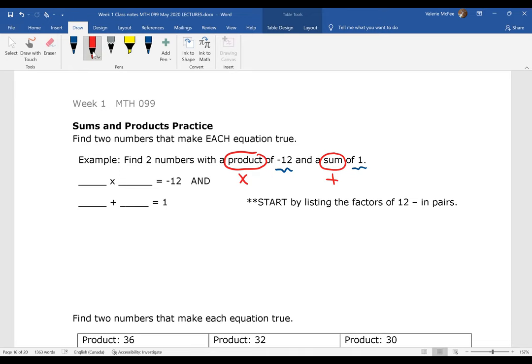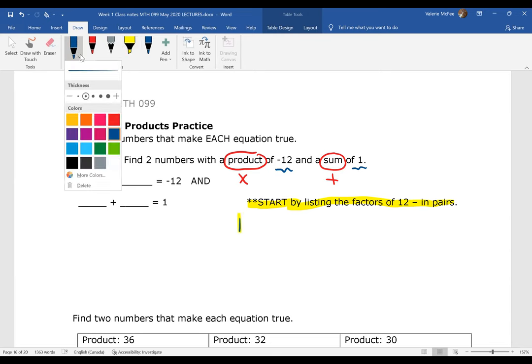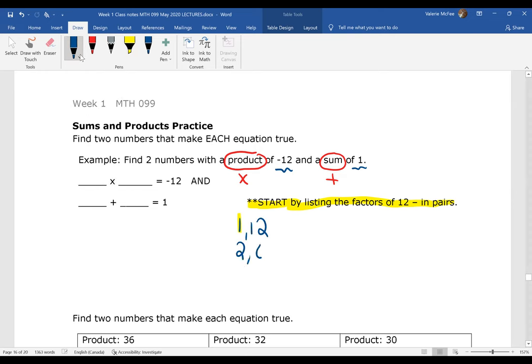So for looking for two numbers with a product of negative 12 and a sum of one, I hope you just know what they are. But if you don't know what they are just by thinking about it, you should start by listing the factors of 12 in pairs. So we have 1 times 12, 2 times 6, 3 times 4. Now I see when I'm subtracting 3 and 4 would give me 1. So I'm putting the same numbers in both places here, but I need a product of negative 12. That tells me one of these has to be negative. I need a sum of positive 1. 3 needs to be negative.